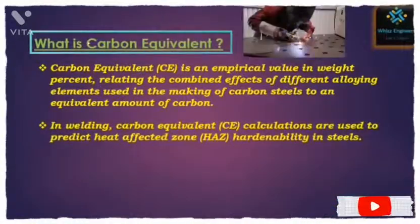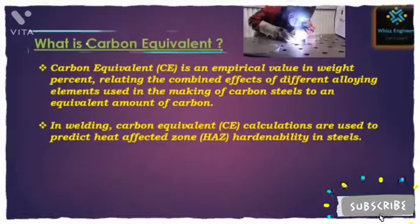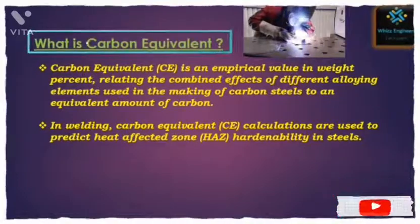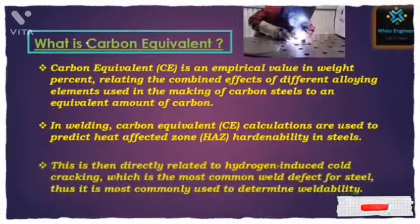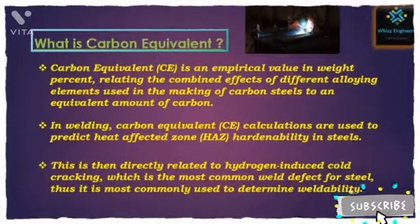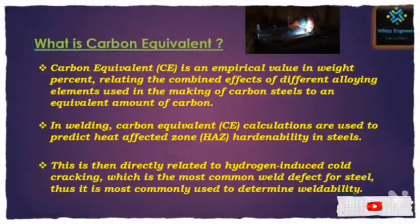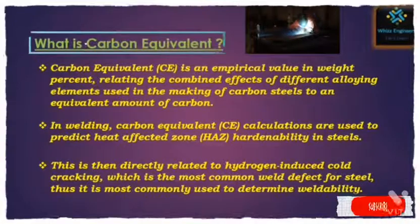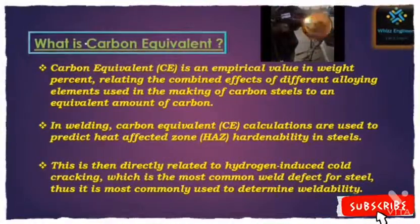In welding, carbon equivalent calculations are used to predict the heat affected zone hardenability in steels. This is directly related to hydrogen induced cold cracking, which is the most common weld defect for steels. Thus, it is most commonly used to determine the weldability.